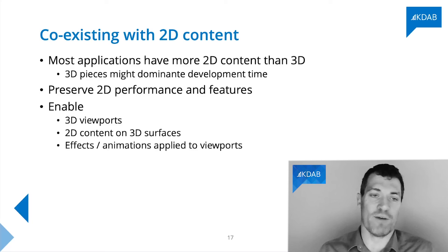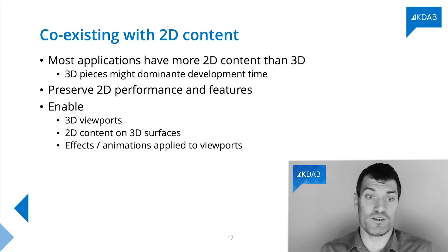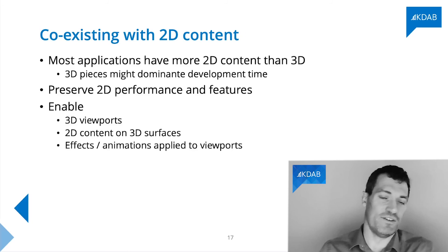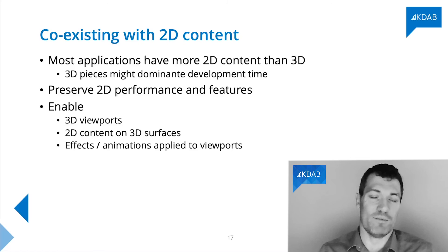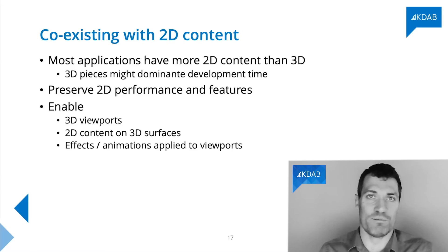We might want a single 3D viewport on one screen or multiple 3D viewports coexisting. We might also want 2D content to exist on 3D surfaces, and traditional Qt Quick effects such as animations or graphics effects overlaid on top of, underneath, or around 3D viewports. If we make the right choices, all of these things can work with good performance, but it's very easy to compromise on some of them, and sometimes you simply have to in order to get good performance on particular hardware platforms.